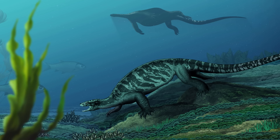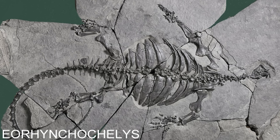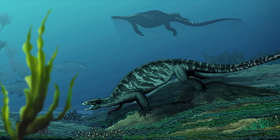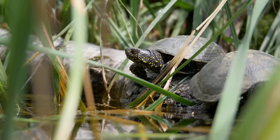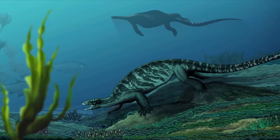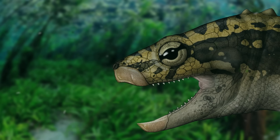230 million years ago in what would become southwestern China, a large aquatic reptile waits at the bottom of its habitat for the right time to strike at a fish. It was called Eorhynchochelys. Eorhynchochelys looked a lot like a large lizard, but it had a wide round-shaped body supported by wide flat ribs that look like those found on turtle skeletons — the precursor to a shell — making it a member of the group that would eventually become turtles.